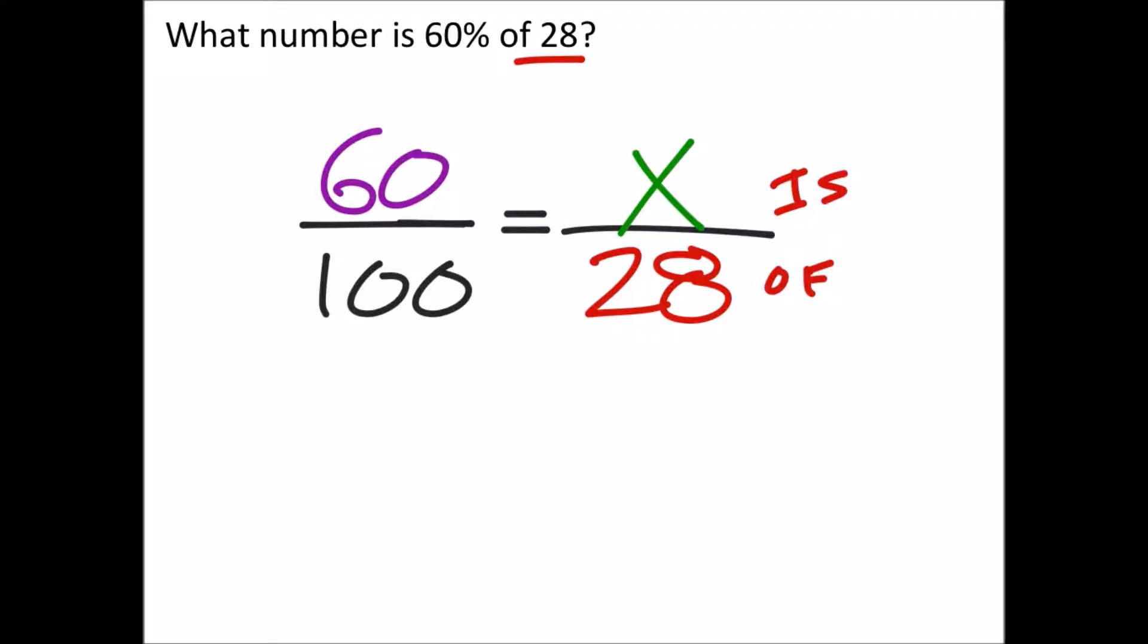Seems like we did cross multiplication last time, so I'm going to use fishy method on this one. So that would give me 28 times 60 divided by 100 equals x.